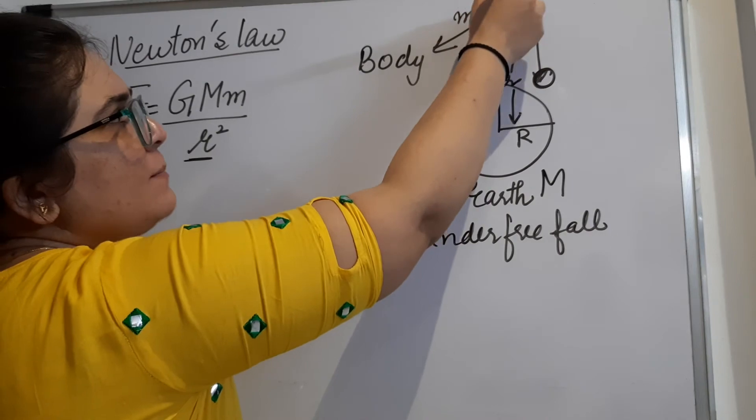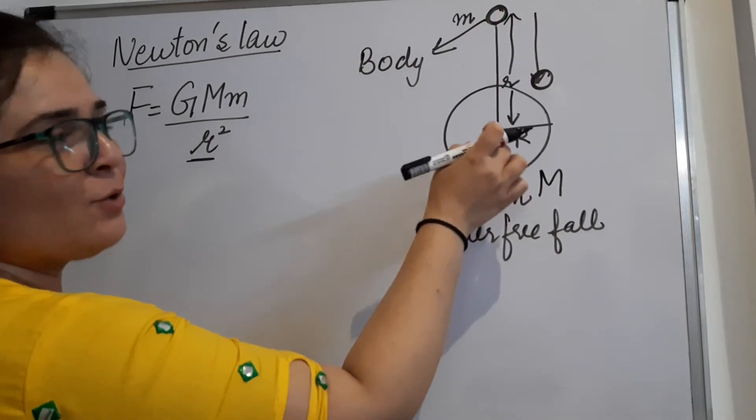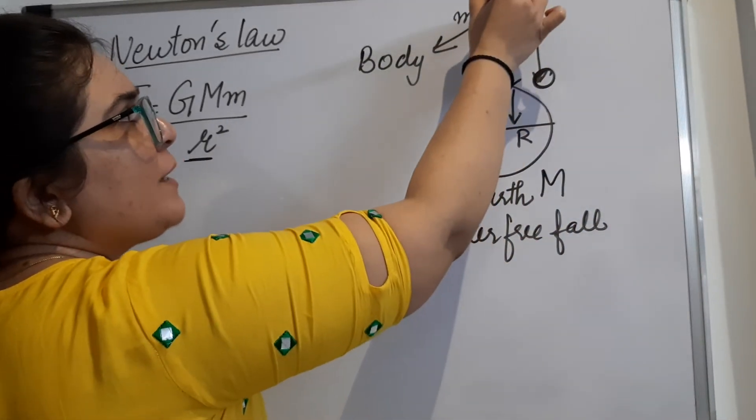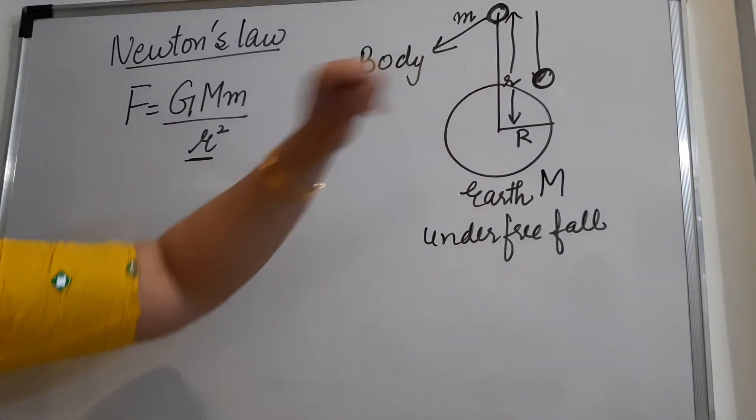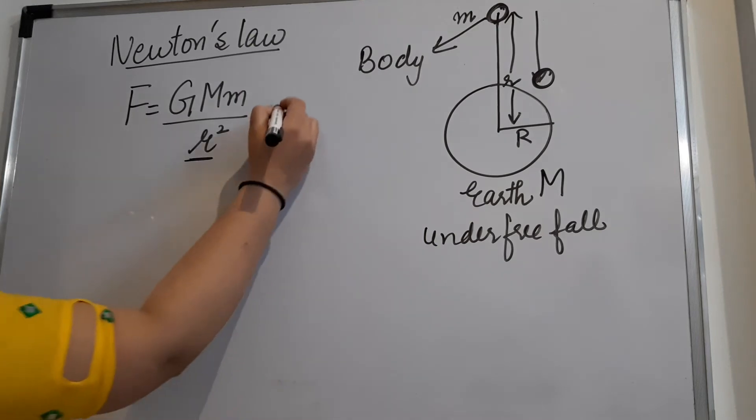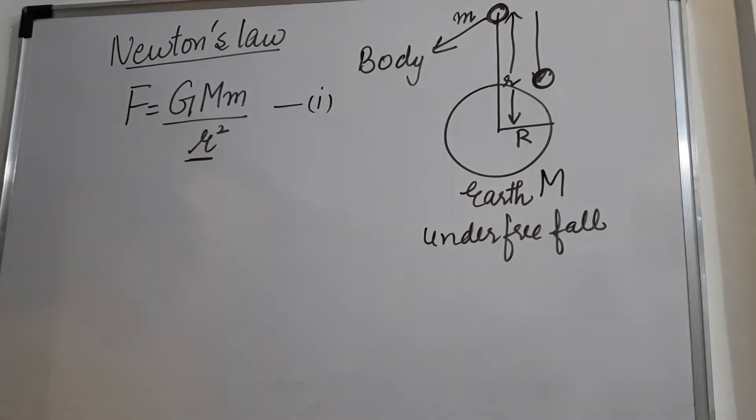Now, here the ball is a point object as compared to the Earth, so I have mentioned it from here. Else you also can take it from the exact center of the ball. So this distance is small r. So let's say this is the first equation that we have got.